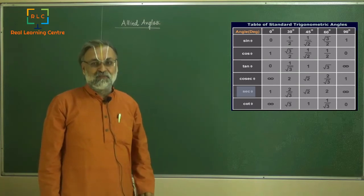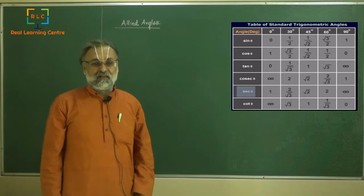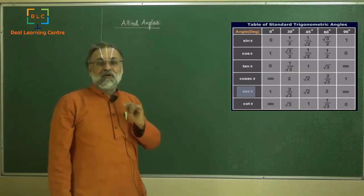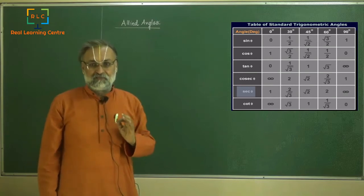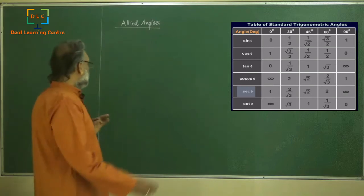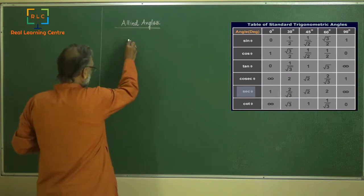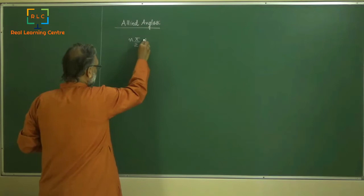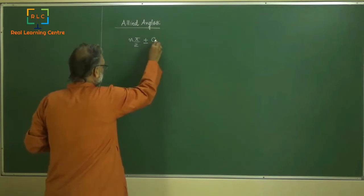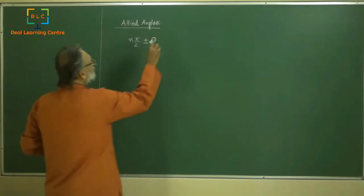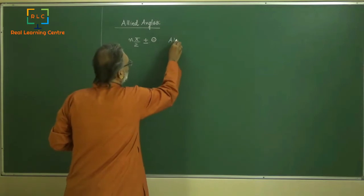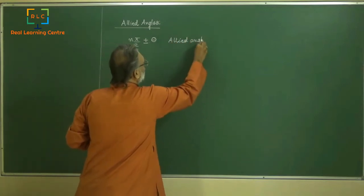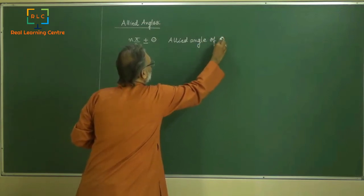Today's topic is allied angles. What is an allied angle? Any angle which can be expressed in the form n·π/2 plus or minus theta is called an allied angle — it is called an allied angle of theta.